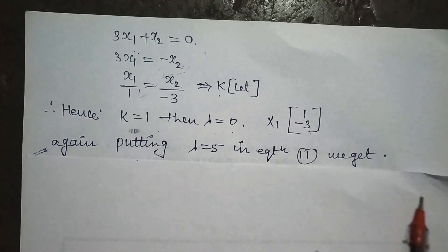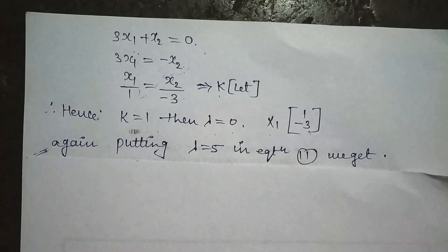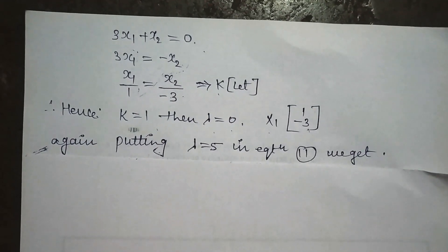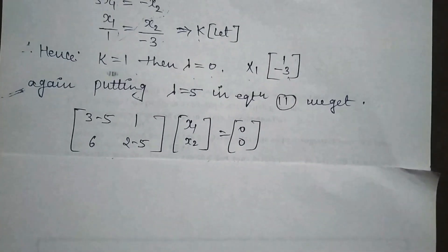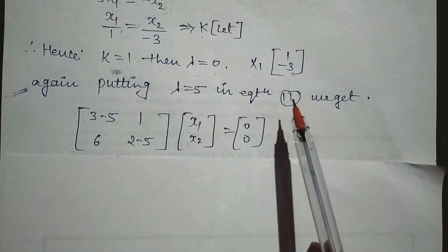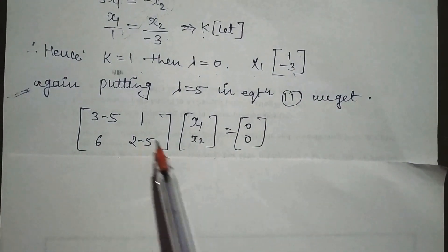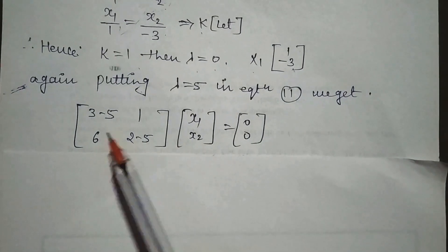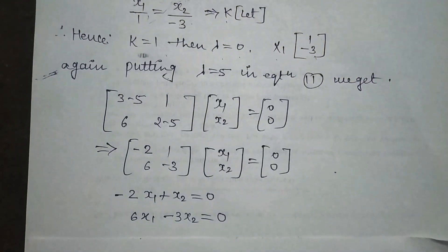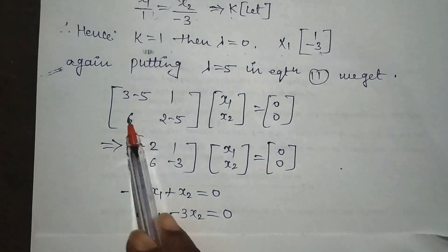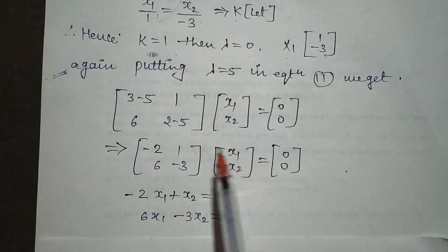Similarly, we put the lambda value and perform the operation. We put λ = 5 here. We subtract these values. We do the subtraction, then the multiplication - this will multiply with this.